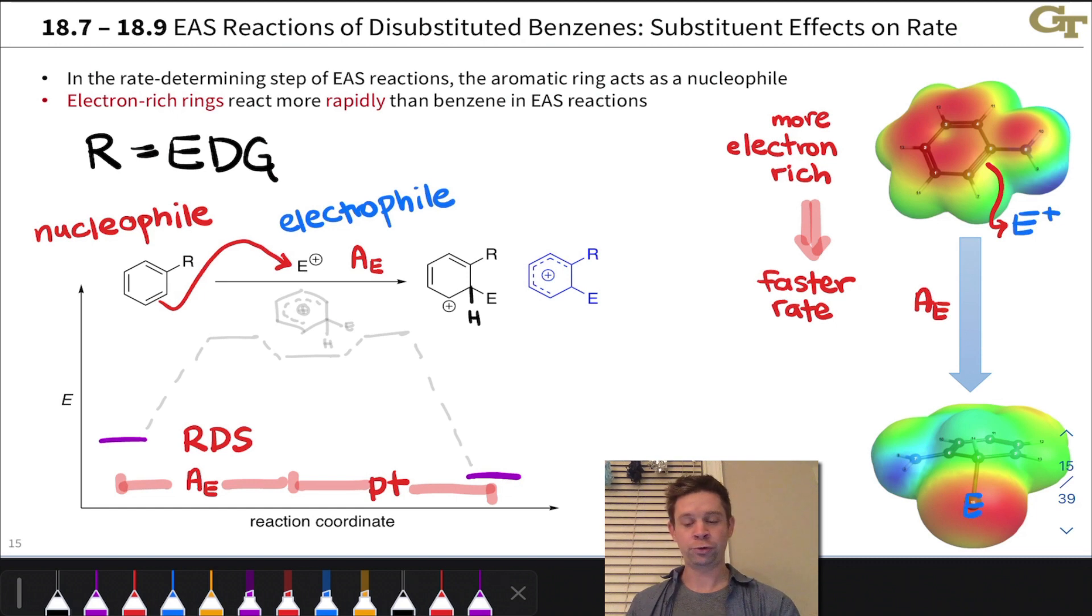This occurs through stabilization of the arenium ion intermediate. We're going to explore that stabilization in more detail when we talk about regioselectivity in the next few videos. For the time being, the thing we want to notice here is that substituting the H in benzene for an electron-donating group R is going to lower the activation energy of that rate-determining step by stabilizing the arenium ion, too.